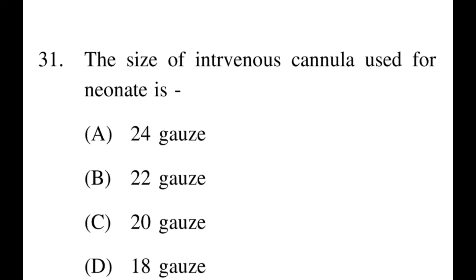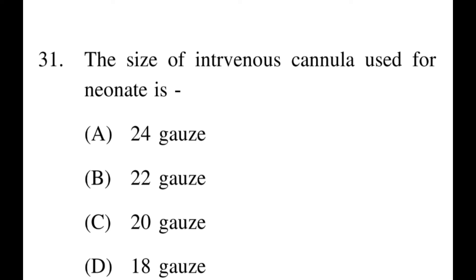Next question: The size of intravenous cannula used for a neonate? Options: A: 24 gauge, B: 22 gauge, C: 20 gauge, D: 18 gauge. The right option is A, 24 gauge. The 24 gauge cannula is yellow in colour and is mainly used for neonates. There is also a smaller 26 gauge purple cannula, but 24 gauge is mainly used for neonates.